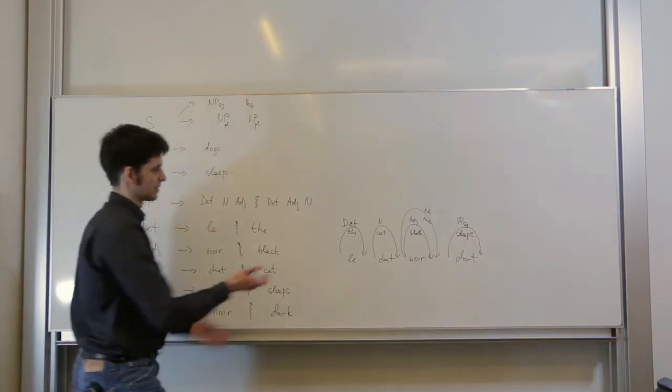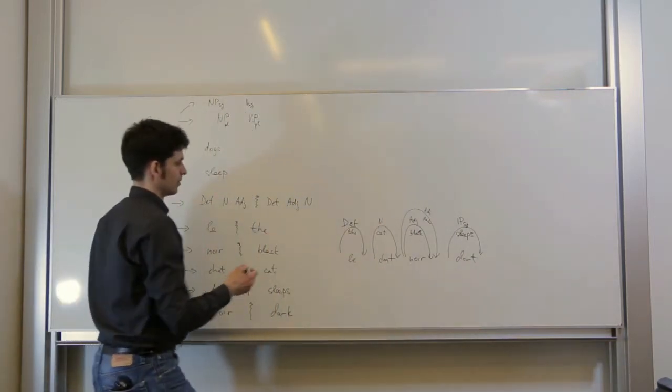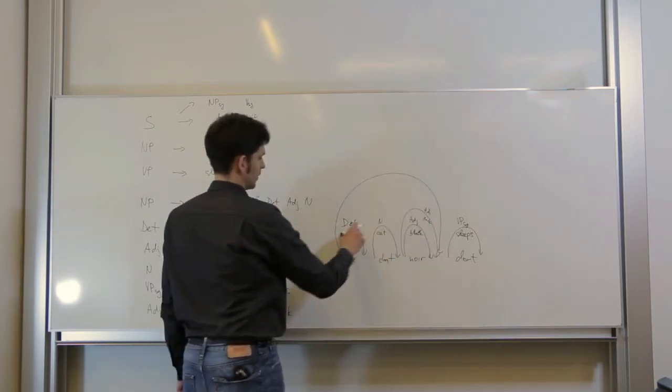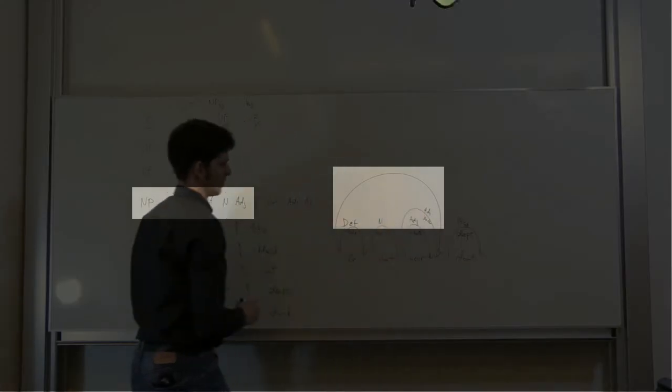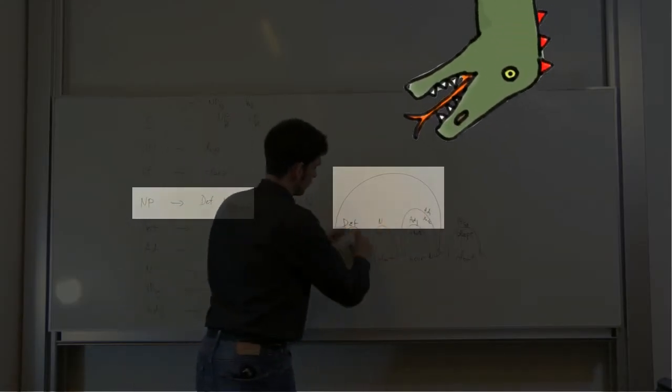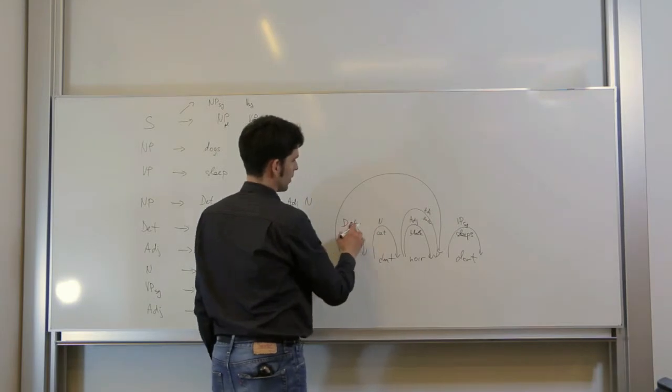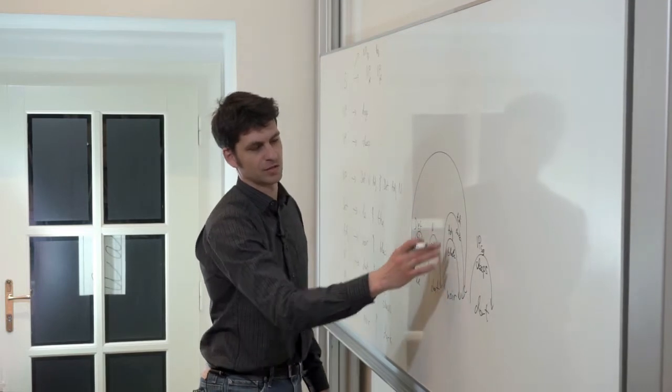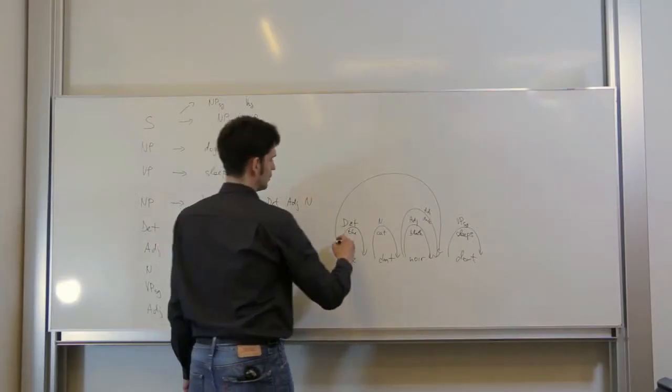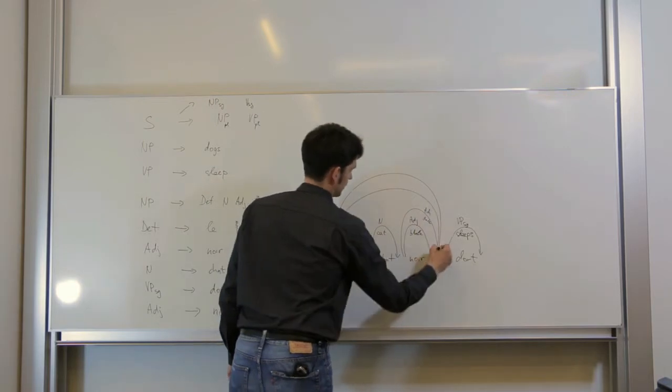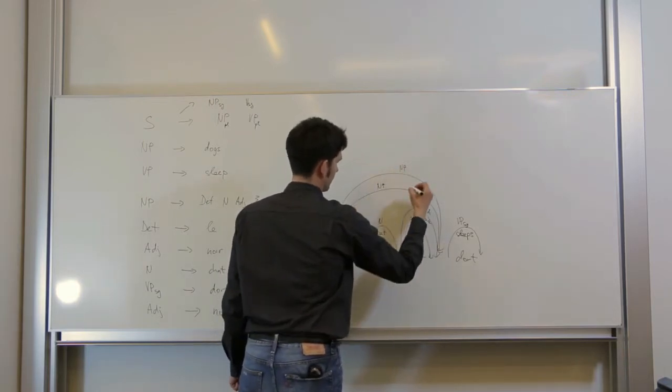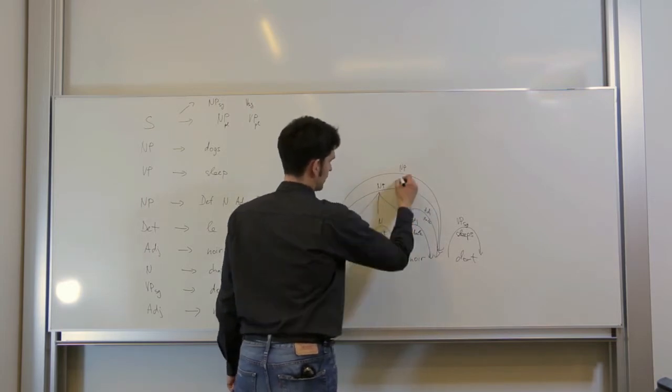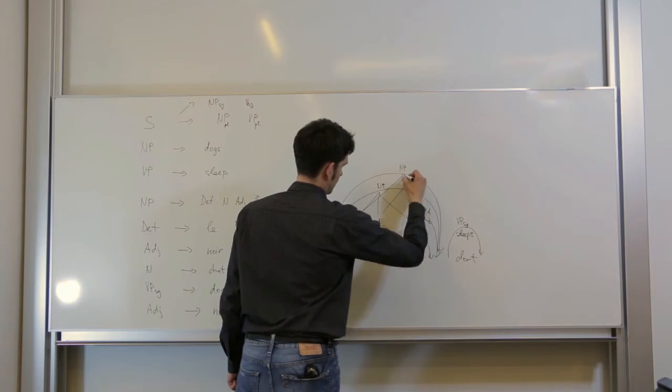We are now processing the sentence bottom up. So the divide and conquer approach is reflected in the fact that when putting these pieces together, determiner, noun and adjective, the computer doesn't look anywhere further. So it doesn't consider what the determiner consisted of and what the adjective consisted of. For each of these two variations of the adjective, the dark and the black, there will be two separate noun phrases created. Both will have the same label NP on top and one of them will correspond to the translation of black and the other one will correspond to the translation of dark.